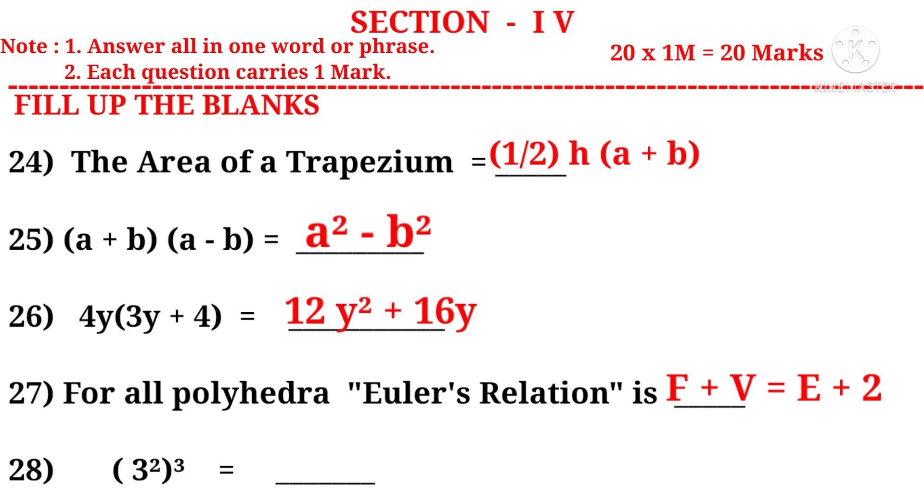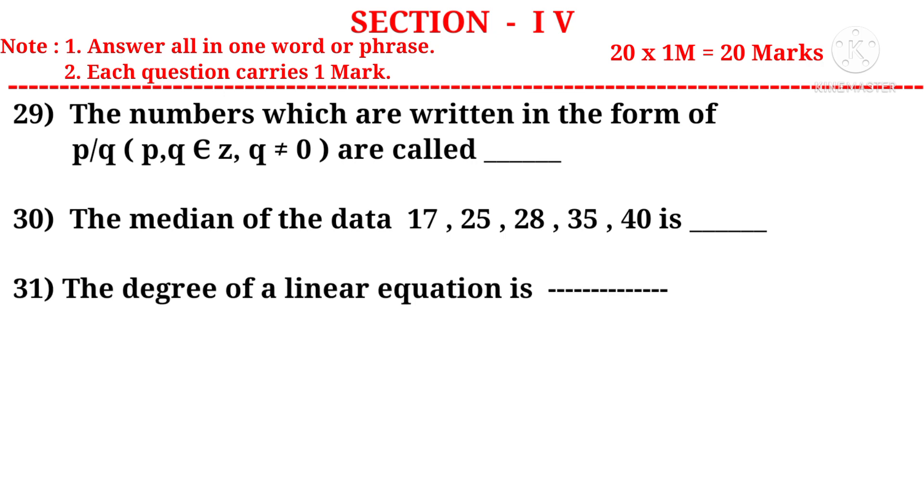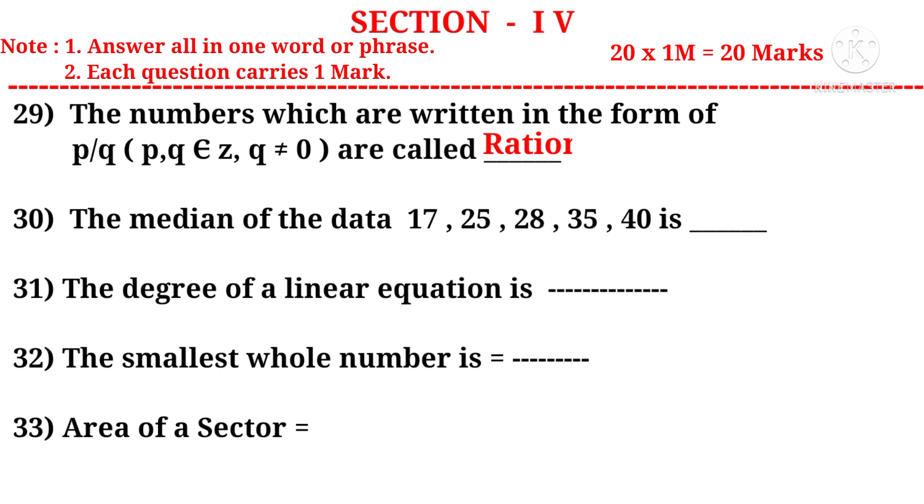Question 28: (3^2)^3 = 3^6, because (A^M)^N = A^(MN), or 729. Question 29: The numbers which are written in the form of P/Q, where P, Q belongs to Z and Q ≠ 0, are called rational numbers.